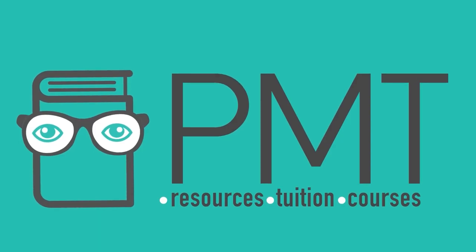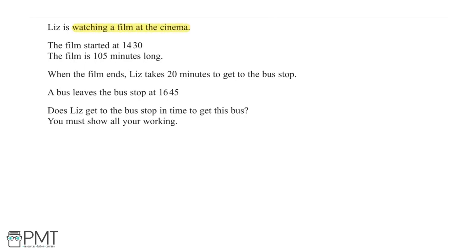Liz is watching a film that started at 2:30. The film is 105 minutes long, and after it ends Liz takes 20 minutes to get to the bus stop. The bus leaves at 4:45. The question asks whether Liz gets to the bus stop in time, and this is worth three marks. First, we convert 105 minutes into hours and minutes by subtracting 60 for one hour, giving 1 hour and 45 minutes.